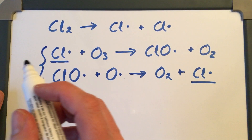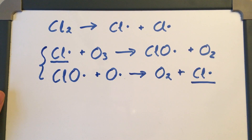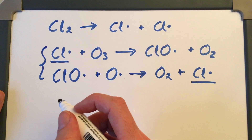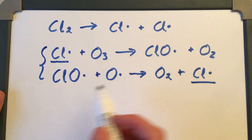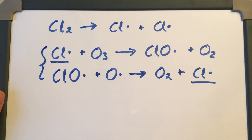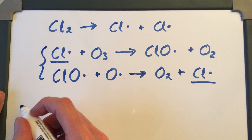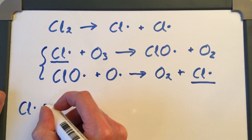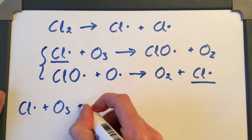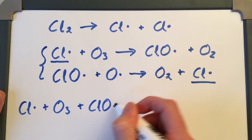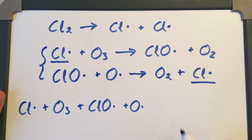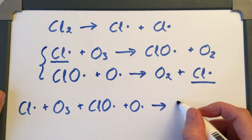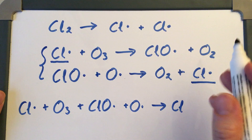You're also sometimes asked to combine the two equations to show that the chlorine radical is a catalyst. If it's a catalyst, it shouldn't appear in the combined equation because it's not being used up or produced. When combining equations, write all the reactants on one side, all the products on the other, and cancel anything that appears on both sides. Our reactants are the chlorine radical, ozone, the chlorate radical, and an oxygen radical. Our products are a chlorate radical and oxygen.